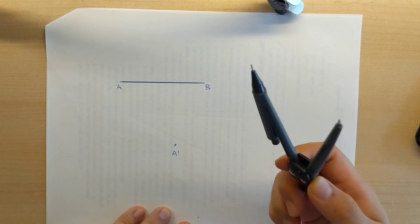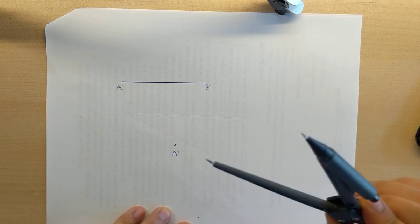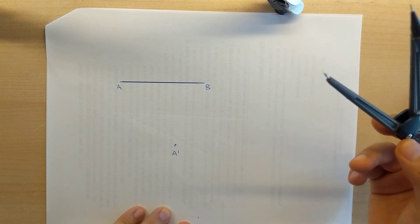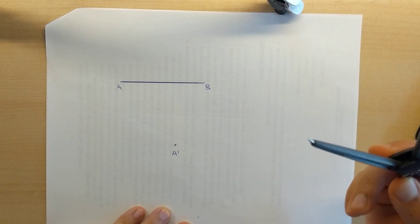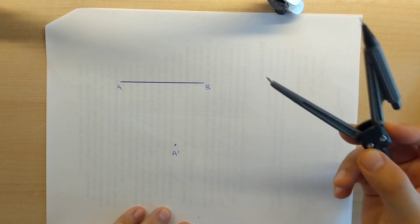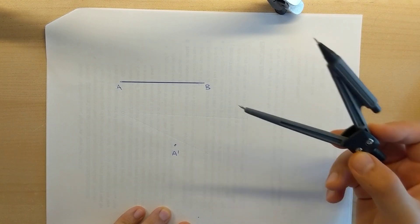So your compass serves two purposes. And one of which is to draw circles obviously. The other is a compass is used to measure length.